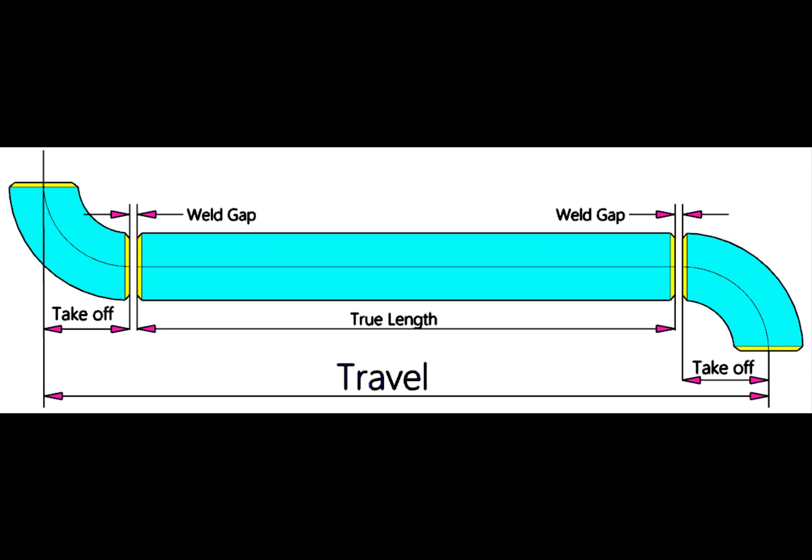So how will we calculate the true length of the spool? The true length or cut length is: add 2 welding gaps and 2 take offs, then minus this sum from the travel.